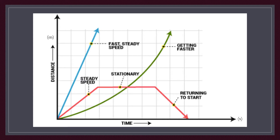The green 'getting faster' distance-time graph shows increasing velocity. The change in distance is small at the beginning of the movement, and as time progresses the change in distance increases. This shows an increasing velocity, also known as acceleration.